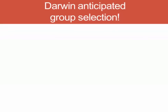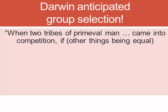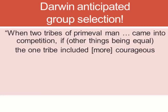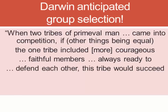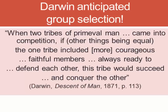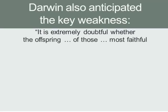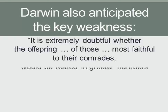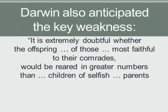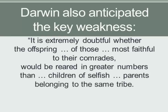Darwin anticipated group selection and is often quoted to this effect: when two tribes would come into conflict, if one included individuals more willing to sacrifice for other members of the tribe, that tribe would presumably prevail over another group filled with more selfish individuals who would not sacrifice for one another. This seems to be a Darwinian endorsement of Wynne-Edwards. But Darwin also anticipated the key weakness in the group selection position.